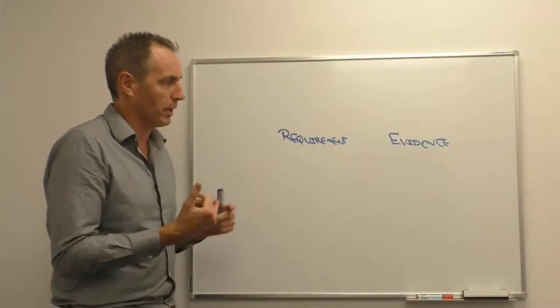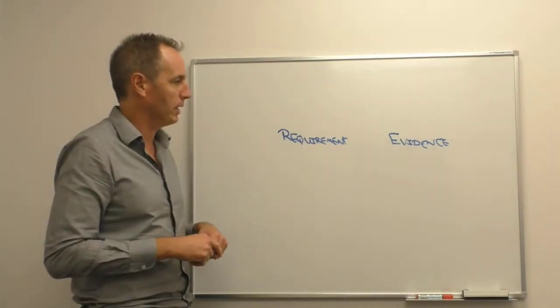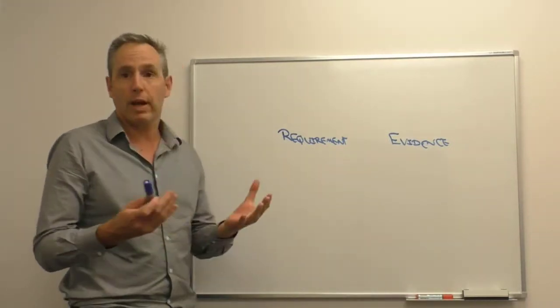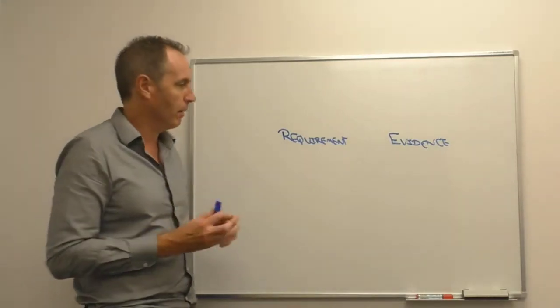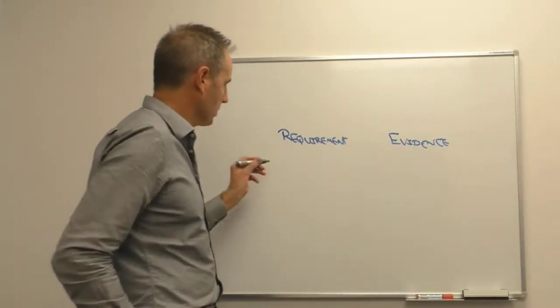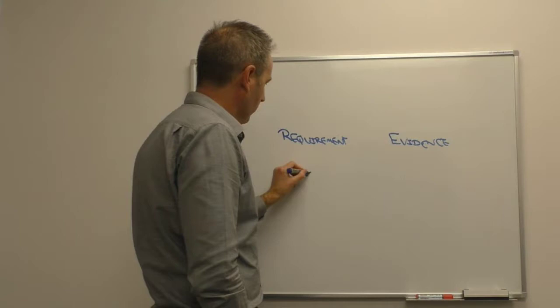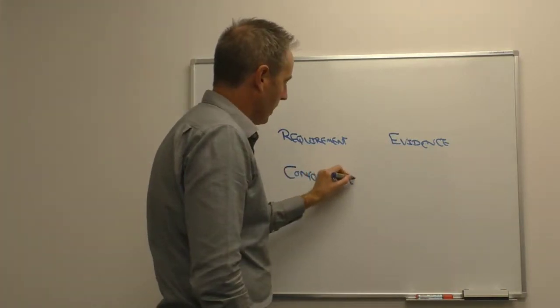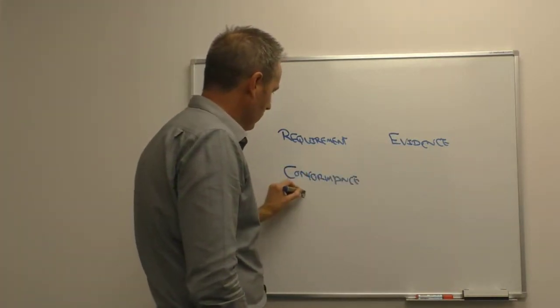Obviously within our organization where we're conducting internal audits, we're going to have to make ourselves aware of what our audit finding categories are. Most organizations are going to need at least one category for conformance and at least one category for non-conformance as well.